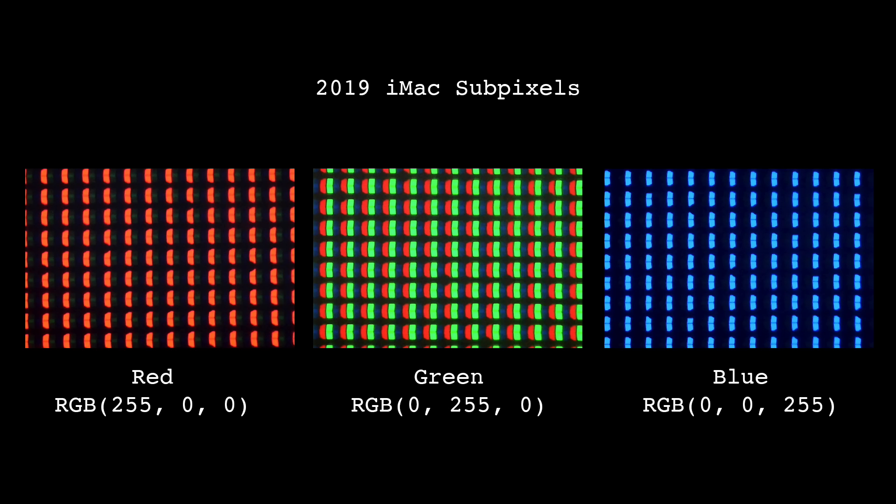screens have sub-pixels that are significantly more capable, and if one were to turn on just the green sub-pixel, they'd get a color that's more saturated than the sRGB green.